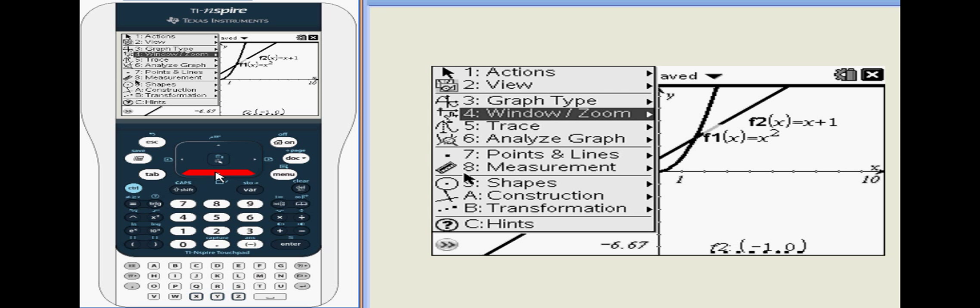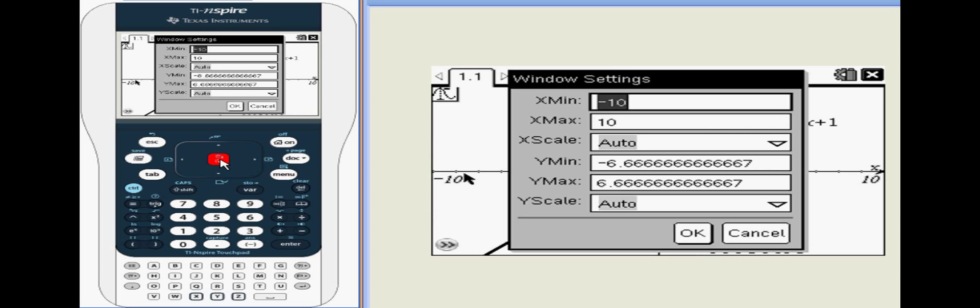If you need to adjust the window to display a different part of the graph, press menu and go to window view. First, we adjust the window manually by changing the x-minimum value to negative 20.